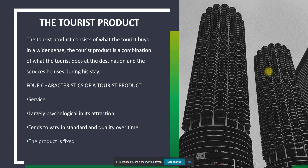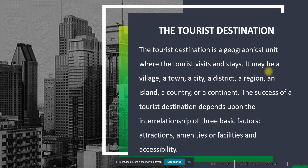We also discussed the characteristics of a tourist product: it is a service, largely psychological in its attraction, tends to vary in standard and quality over time, and the product is fixed. Now let us proceed to the tourist destination. A tourist destination is a geographical unit where the tourist visits and stays — it may be a village, town, city, district, region, island, country, or continent. The success of a tourist destination depends on three basic factors: attractions, amenities or facilities, and accessibility.